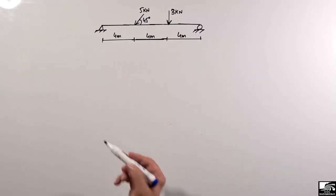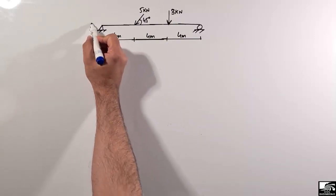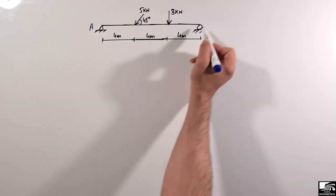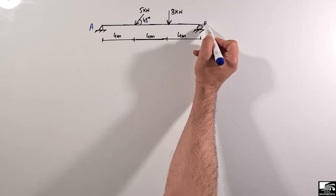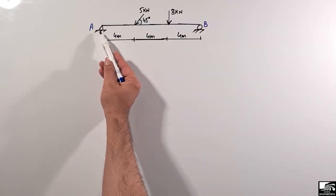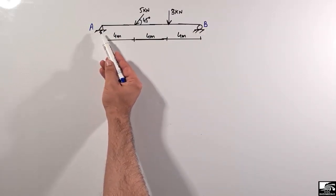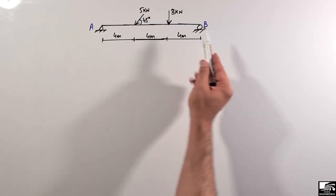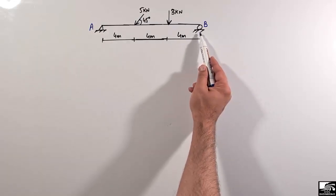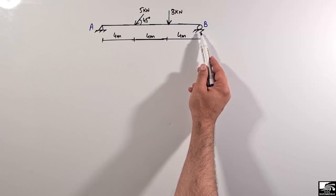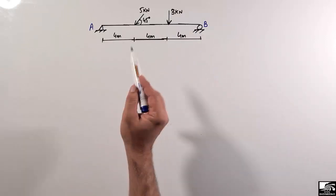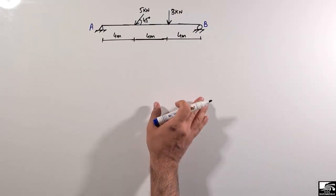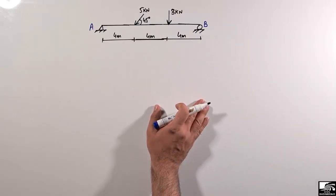Let's call this support A and this support B. Support A is a hinge support, so it can provide two reactions: one horizontal and one vertical. Support B is a roller support, so it can only provide the vertical reaction. First, we have to draw the free body diagram for this beam.